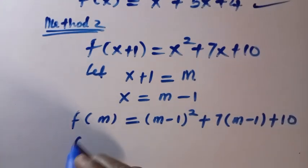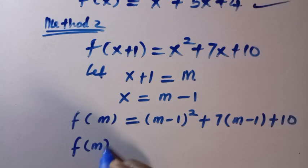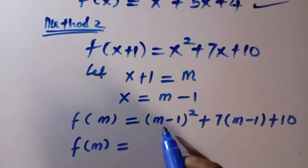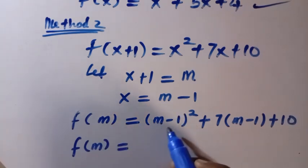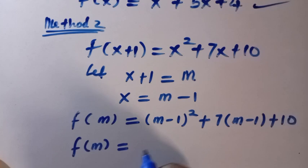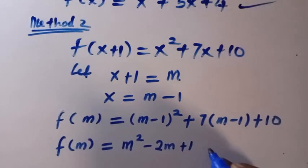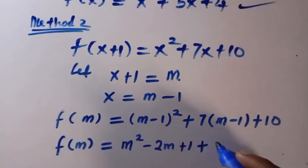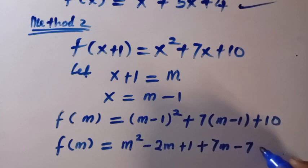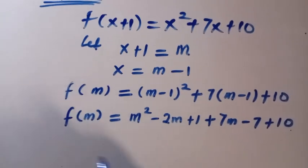Then, from here, we have f of m equals, so we have to expand this, m minus 1 squared. So, this gives us m squared minus 2m plus 1. Then, plus, by opening this, we have 7 times m, that is 7m minus 7 times 1, we have 7, then here is plus 10.